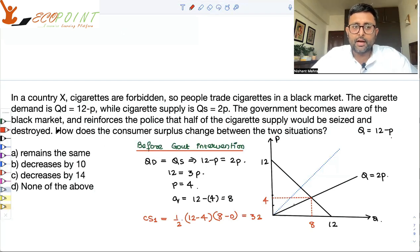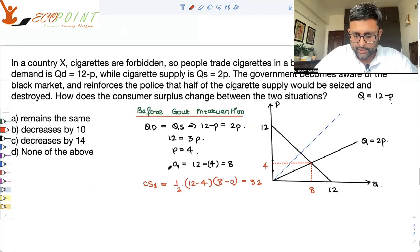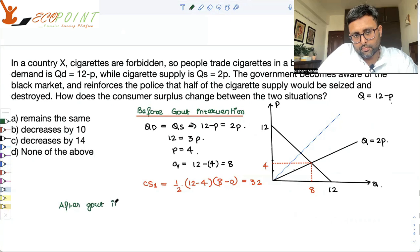The government becomes aware of the black market and reinforces the police that half of the cigarette supply will be seized and destroyed. So after government intervention, after government intervention.